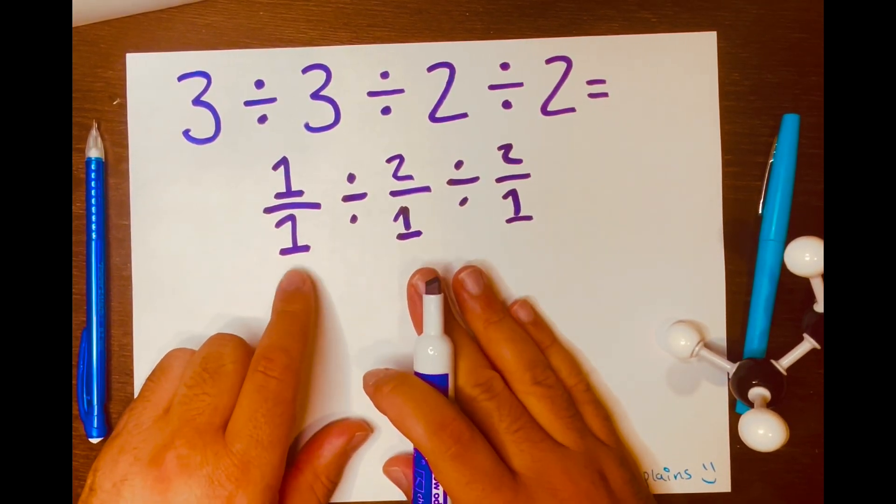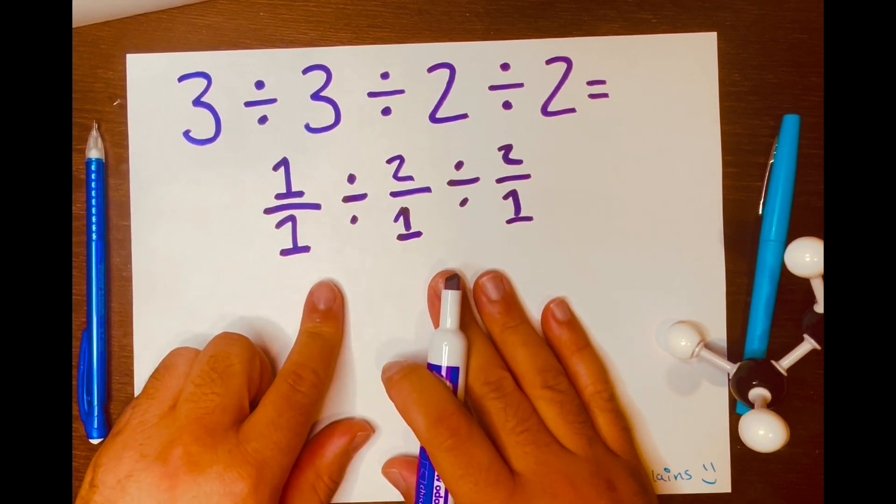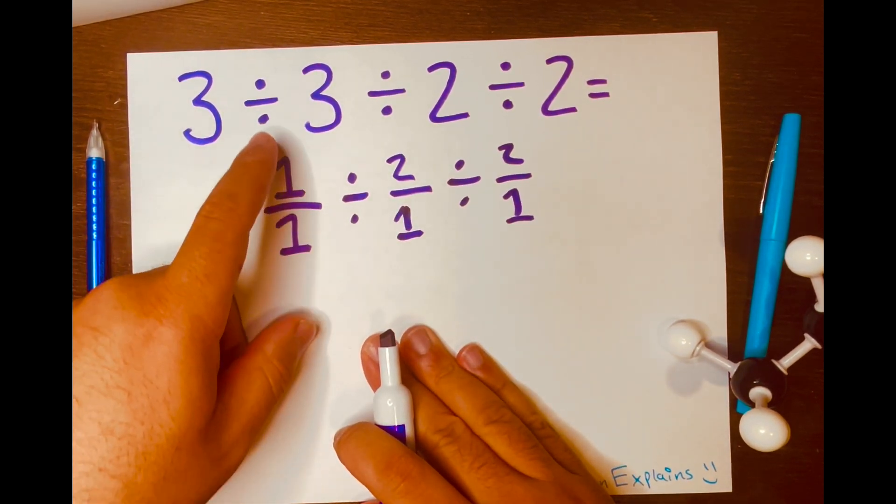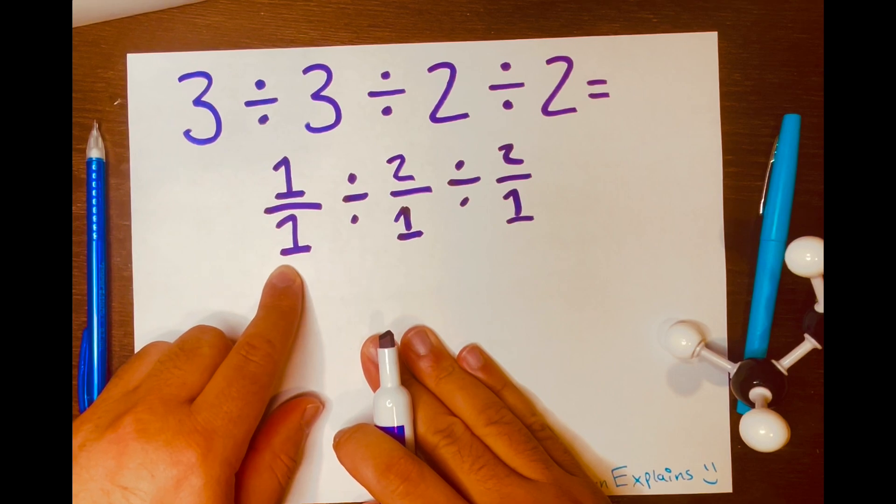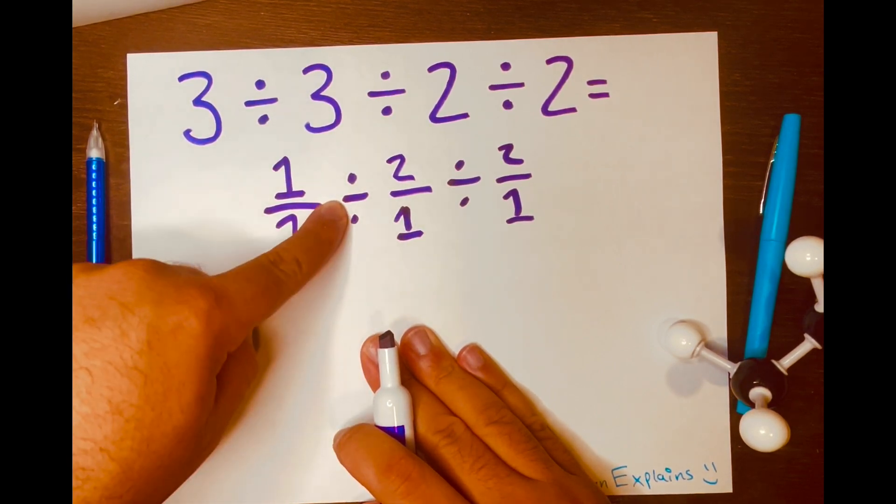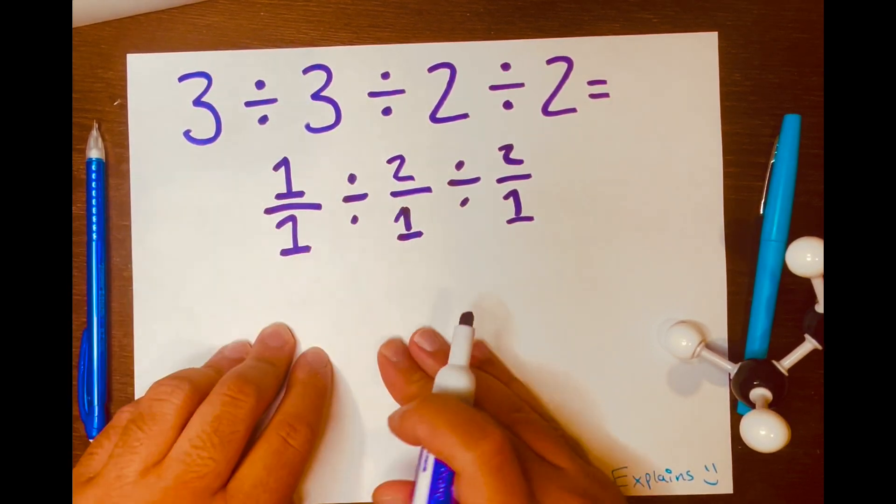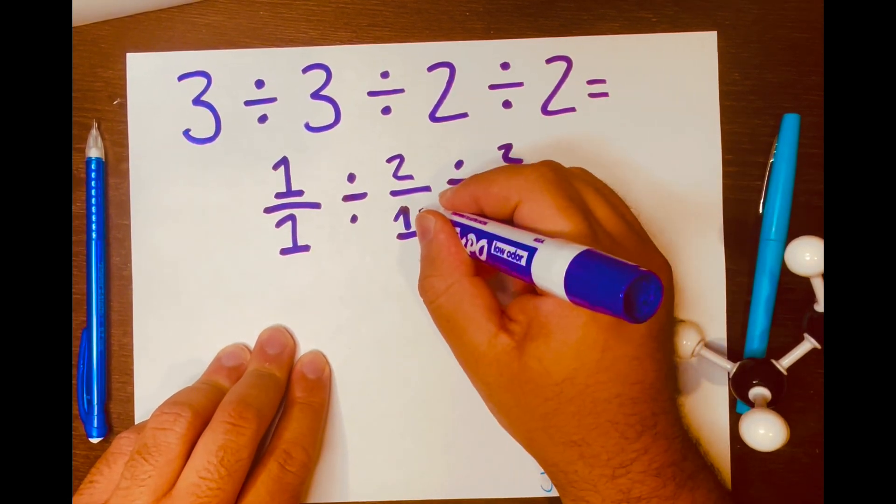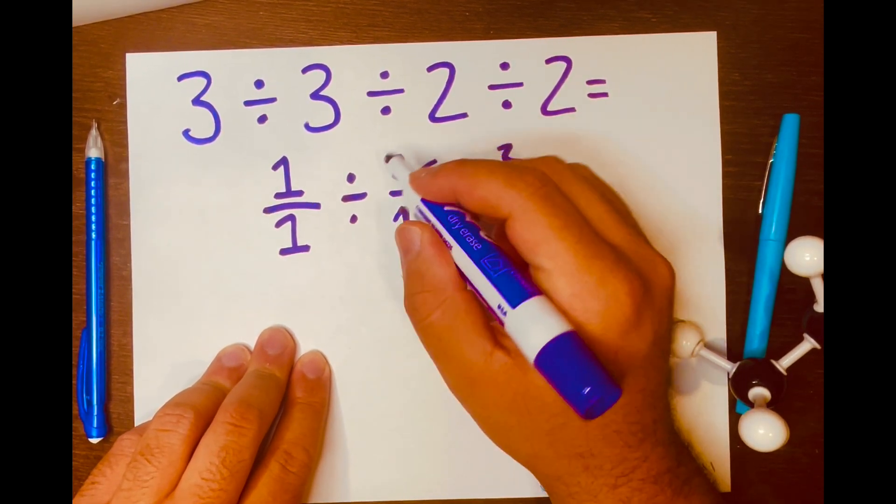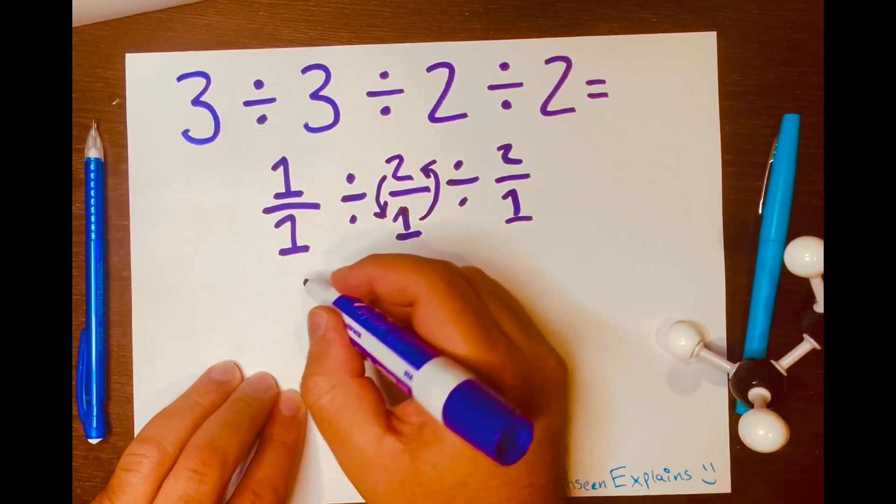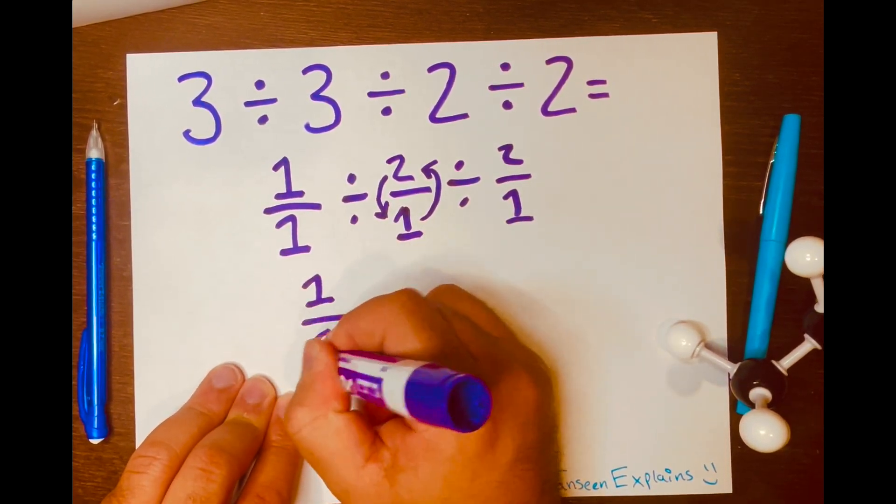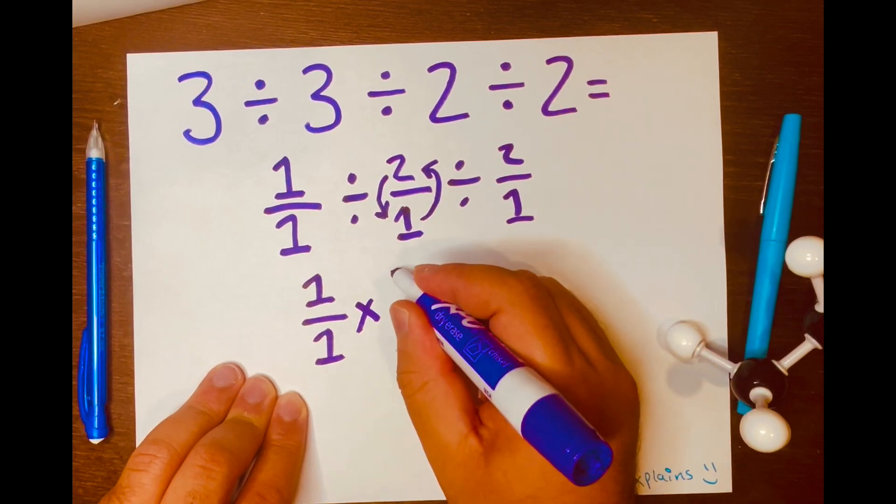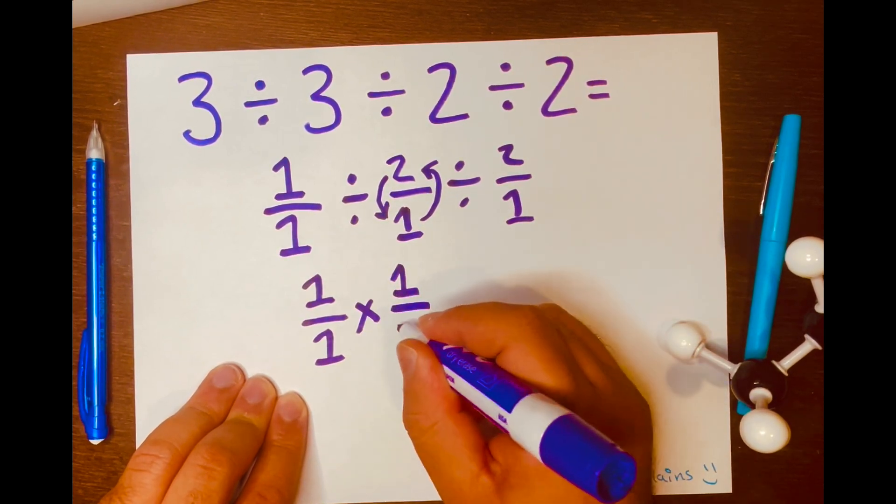Now we're going to use that method keep change flip. So we keep the first and change the division symbol to multiplication and then we're going to flip this fraction. So the 1 will go on top of the fraction and the 2 will go at the bottom of the fraction. So it'll be written like this. 1 over 1 times 1 over 2.